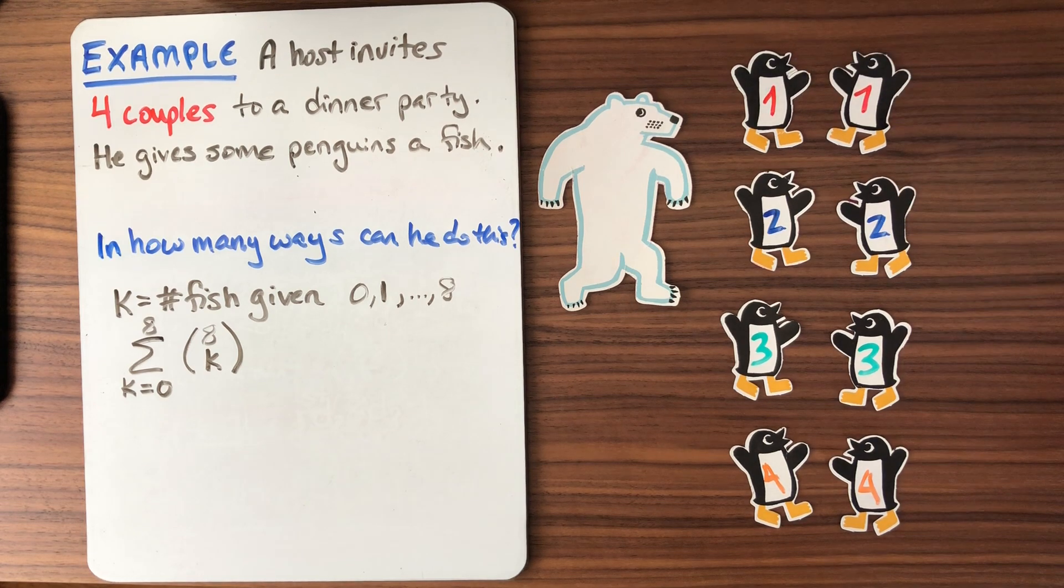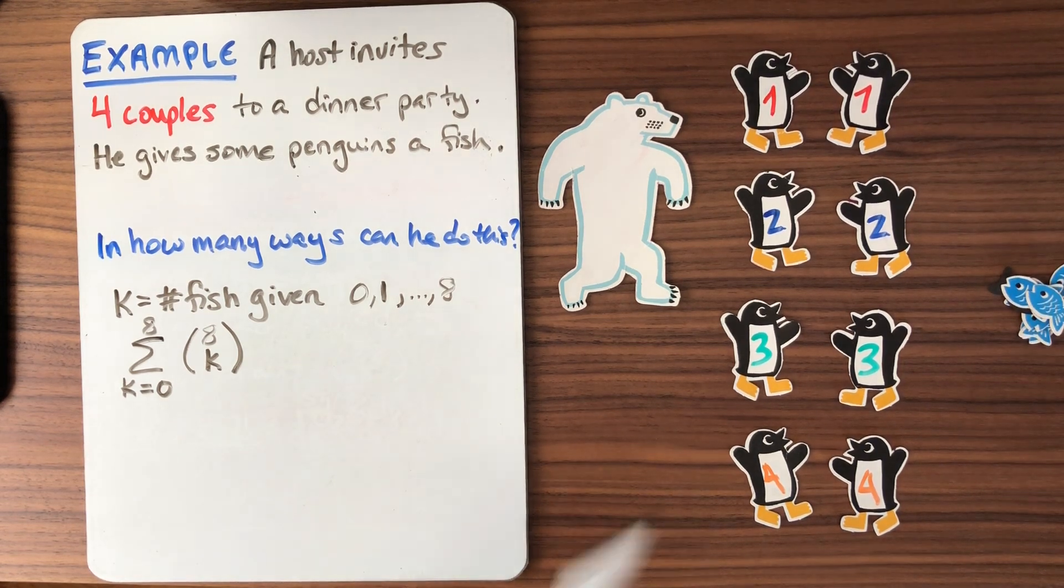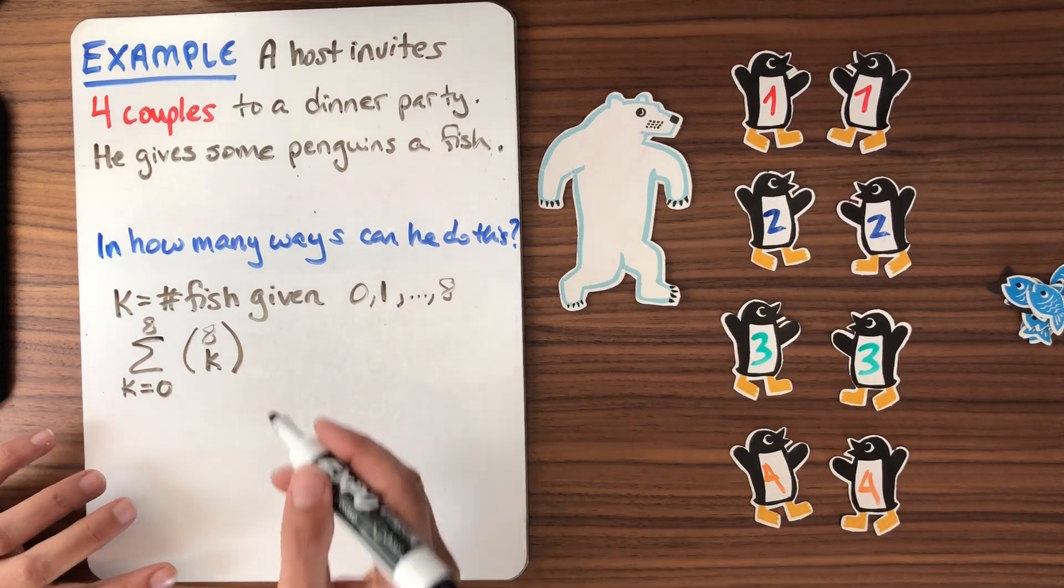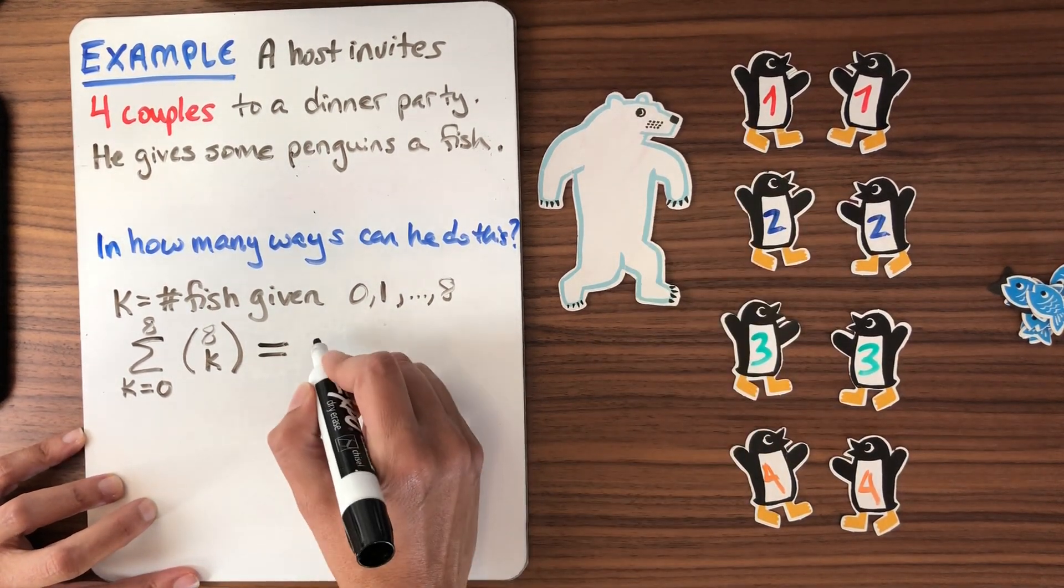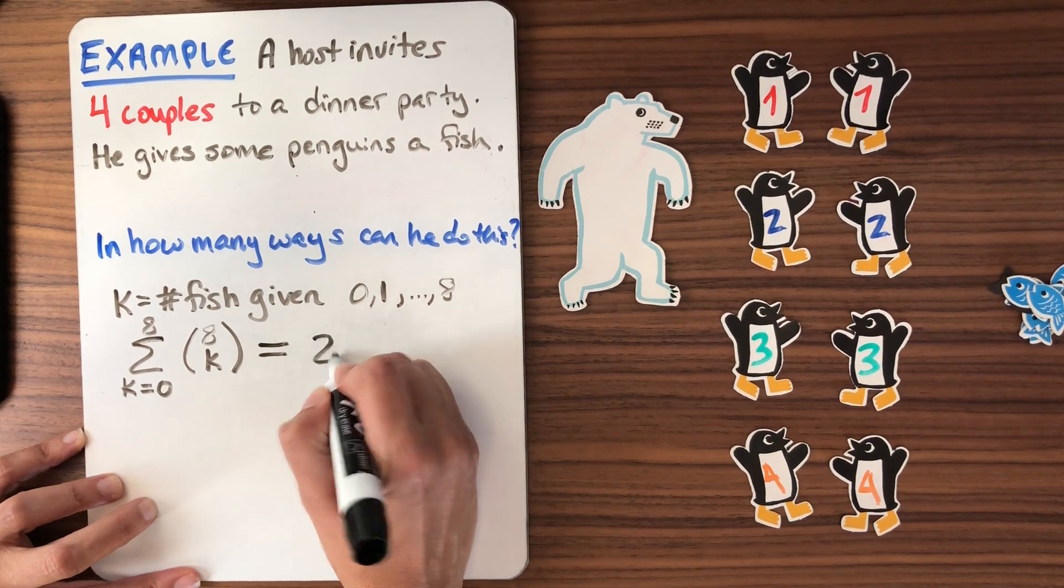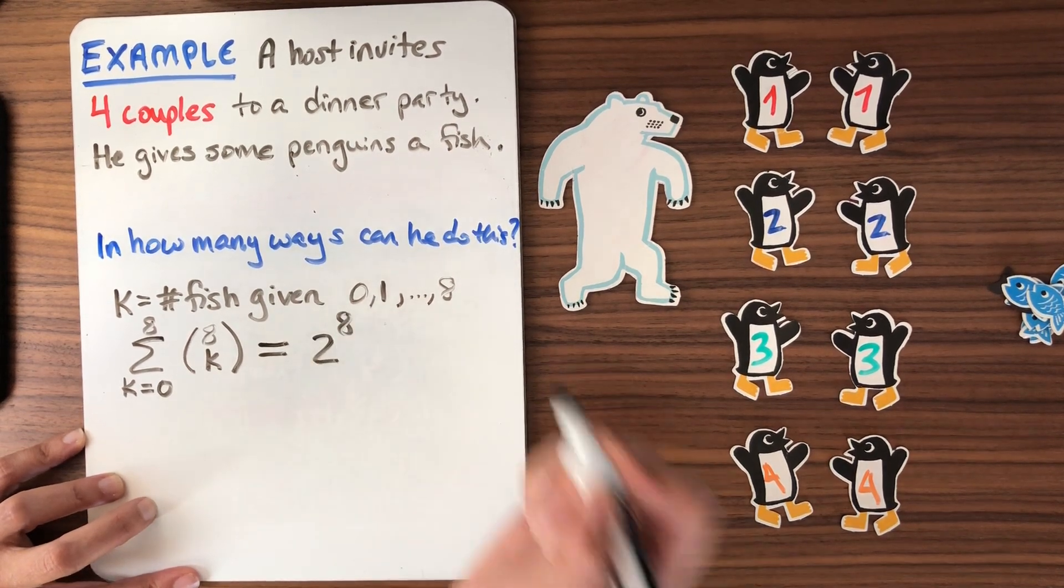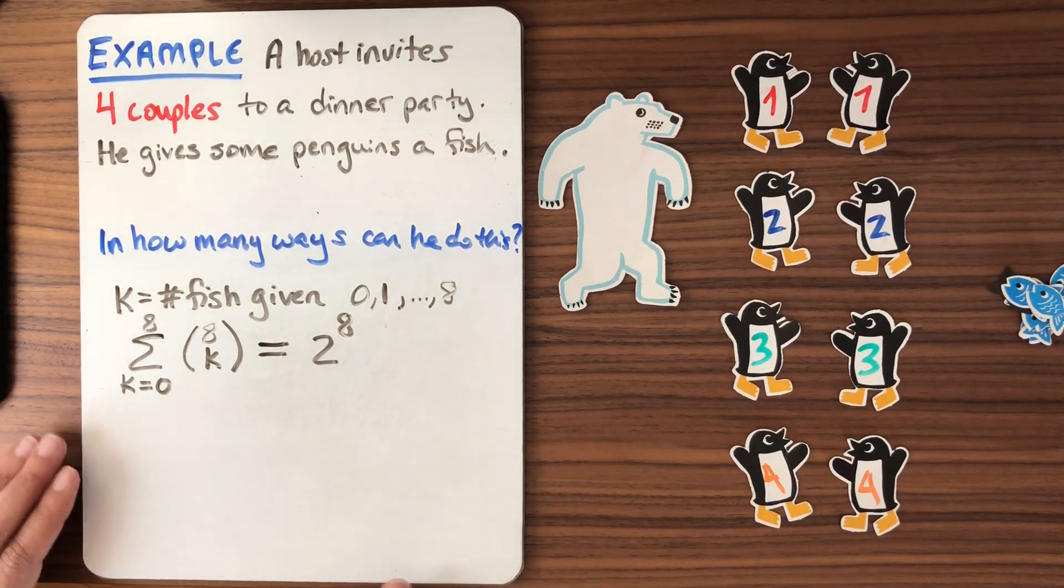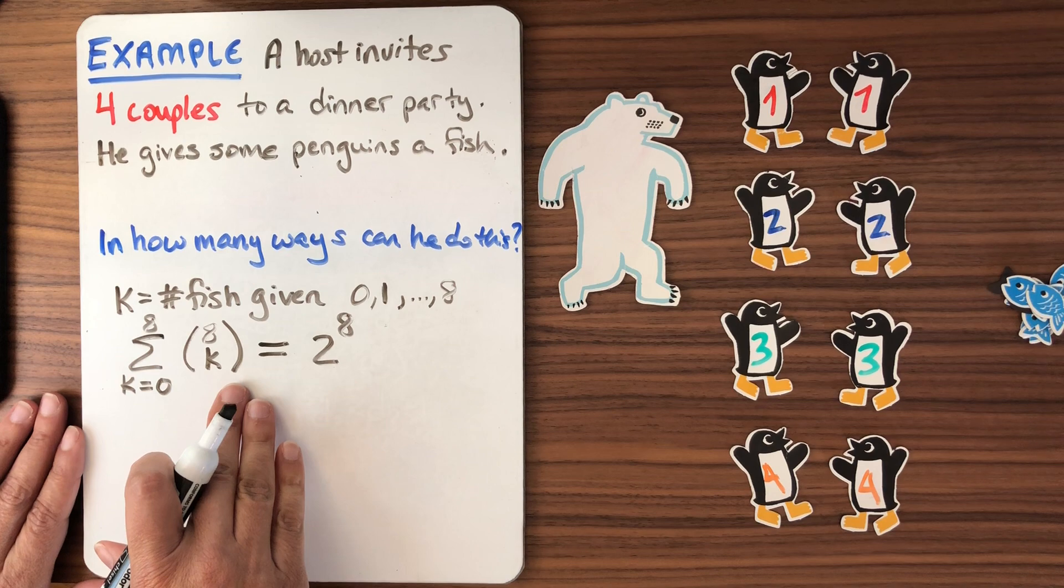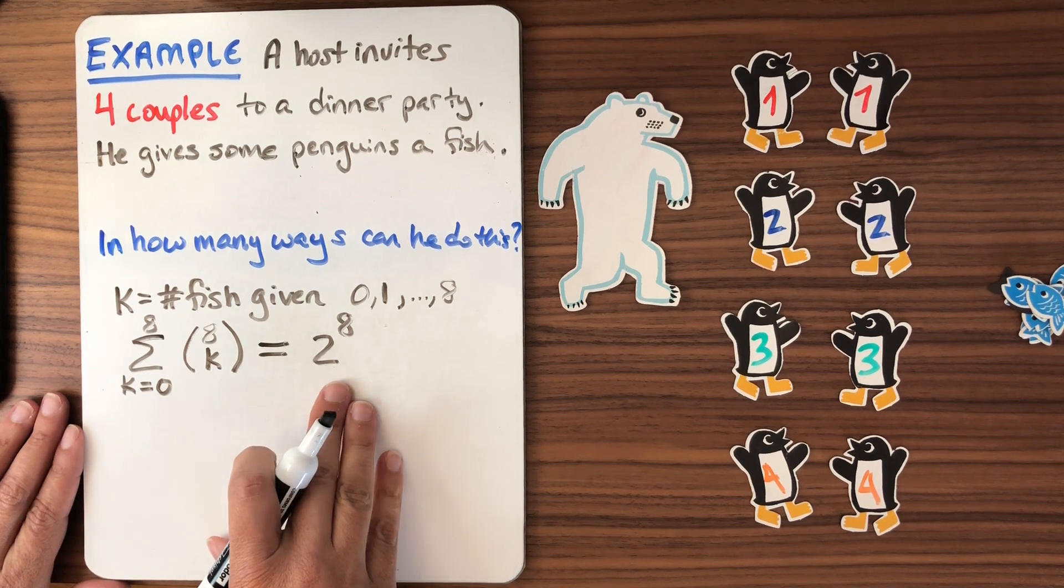Give the fish or not. So when he does it that way, when he just goes around thinking of each penguin one at a time, each penguin comes with two choices. So this is going to be two choices for each of the eight fish. So here's an identity that's always true. If we sum up all of the binomial coefficients, we get a power of two.